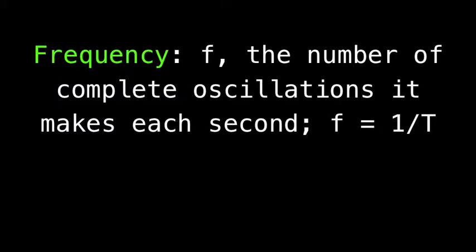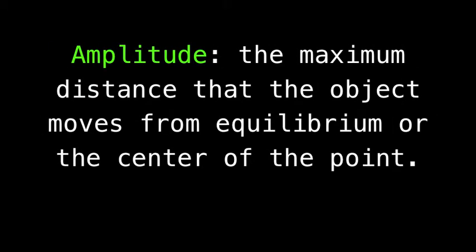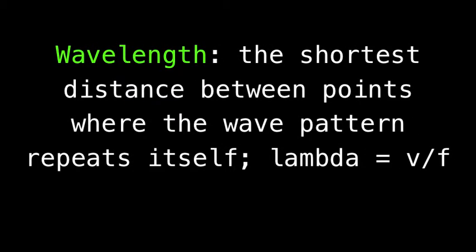Let's break it down. Frequency is the number of complete oscillations it makes each second, F equals 1 over T. Amplitude, on the other hand, is the maximum distance that the object moves from equilibrium or the center of the point. And lastly, wavelength is the shortest distance between points where the wave pattern repeats itself. Lambda equals V over F. Got it?